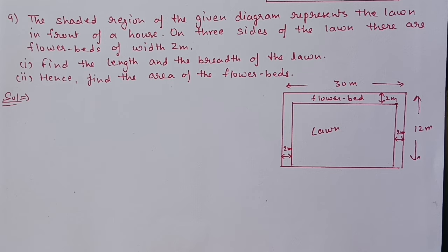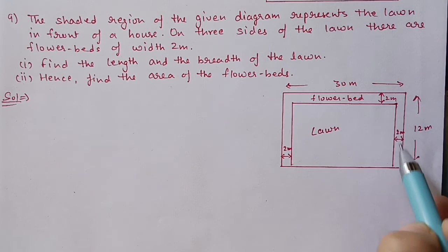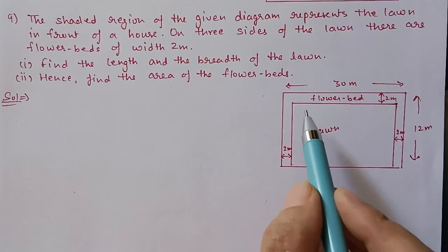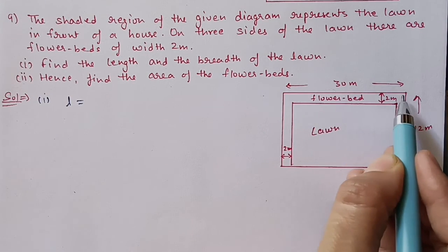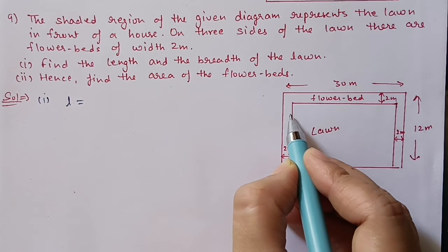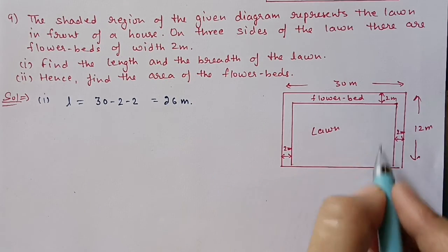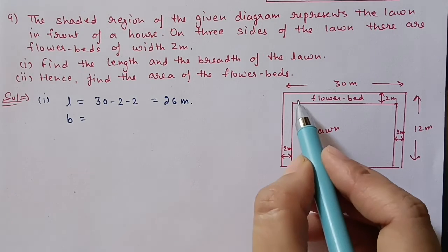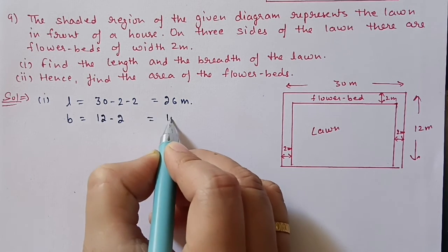Next we have question number 9. The shaded region represents a lawn in front of a house. On three sides of the lawn there are flower beds of width 2 meters. Find the length and breadth of the lawn, hence find the area of the flower beds. The total length is 30 meters; leaving 2 meters on each side gives a lawn length of 26 meters. For breadth, we leave only one side: 12 minus 2 equals 10 meters.